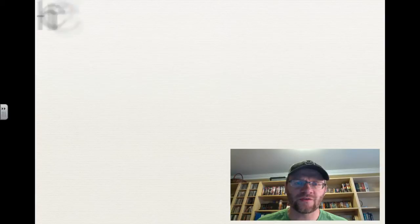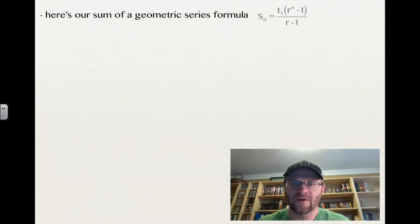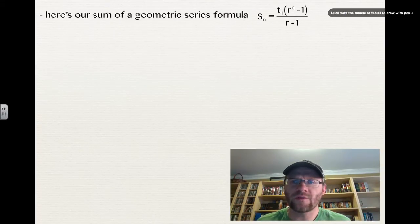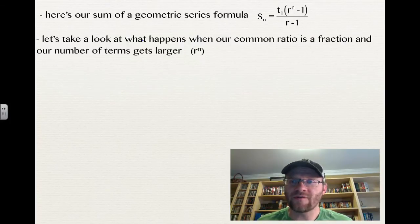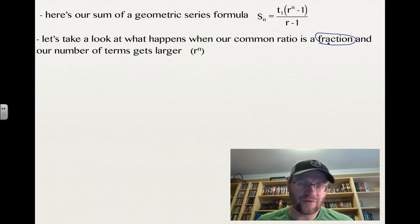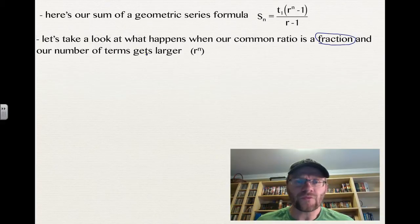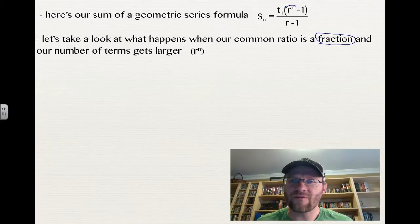Here's our sum of geometric series formula. It's Sn equals T1 times r to the n minus 1 all divided by r minus 1. We're going to take a look at what happens when our common ratio is a fraction and our number of terms gets really big, which would then be r to the n.